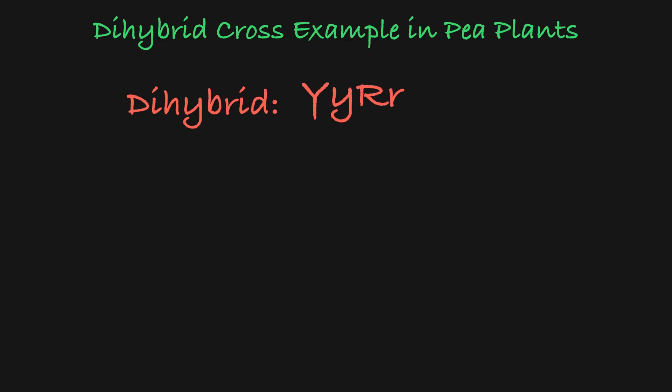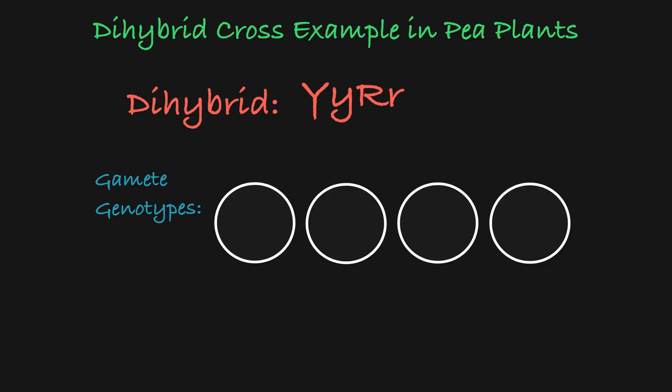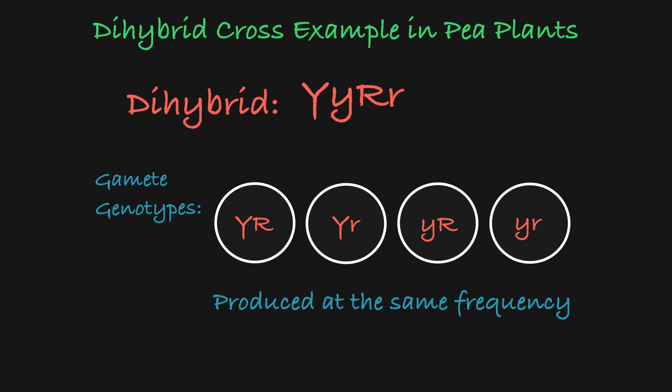Now we want to set up a Punnett square to look at the offspring of this cross. Remember that each row and column of the Punnett square is headed by the different gametes produced by the parent. In this case, the parent genotype can yield four different gametes: one with two dominant alleles, one with two recessive alleles, one with the dominant pea color and the recessive pod shape alleles, and one with the recessive pea color and the dominant pod shape alleles. Given the law of independent assortment, we know that all of these gametes will appear at a roughly equal frequency.